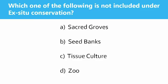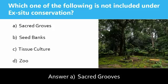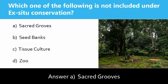Next question: Which one of the following is not included under ex-situ conservation? Options: sacred groves, seed banks, tissue culture, and zoo. The answer is sacred groves. Ex-situ conservation is an approach to protect threatened and endangered species — it means off-site conservation. Sacred groves fall under in-situ conservation; all other options come under ex-situ conservation.